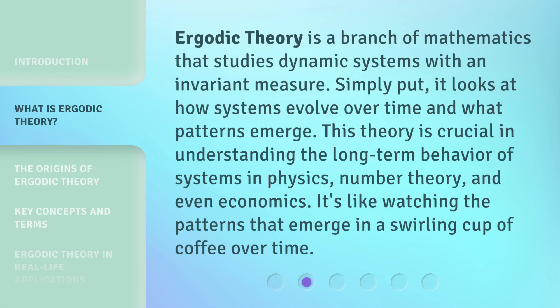Ergodic Theory is a branch of mathematics that studies dynamic systems with an invariant measure. Simply put, it looks at how systems evolve over time and what patterns emerge. This theory is crucial in understanding the long-term behavior of systems in physics, number theory, and even economics. It's like watching the patterns that emerge in a swirling cup of coffee over time.